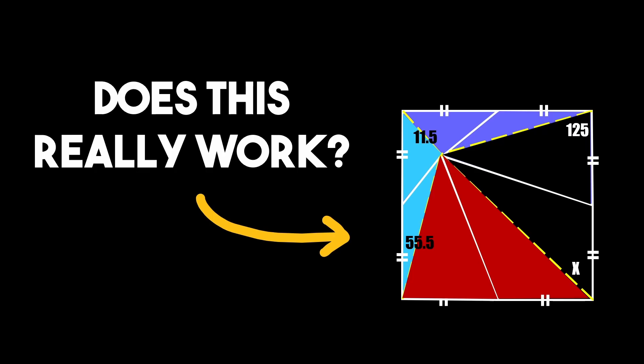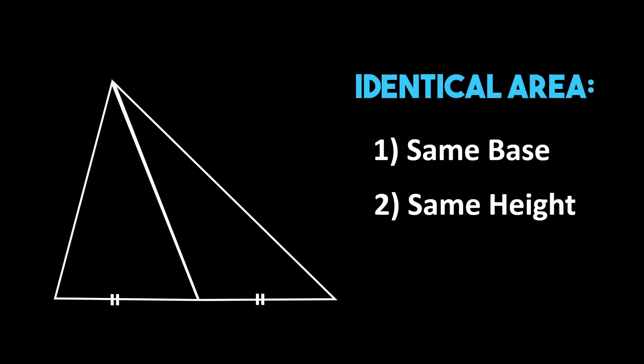So to really convey why drawing these diagonal lines from the corners of the square to our interior point has this effect let's focus on the bottom two triangles. Like we stated before in order for these to have identical areas they need to have the same base and height. Since these lines are congruent it's fairly easy to see that these triangles have the same base.